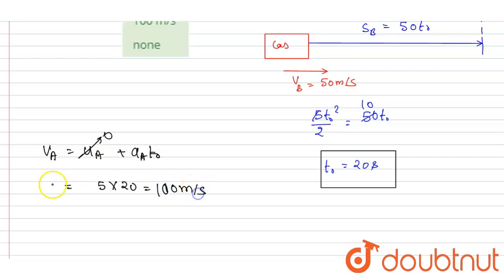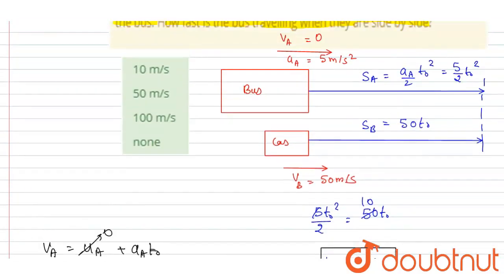Now you can see the option 100 meters per second will be the velocity, so it is C.